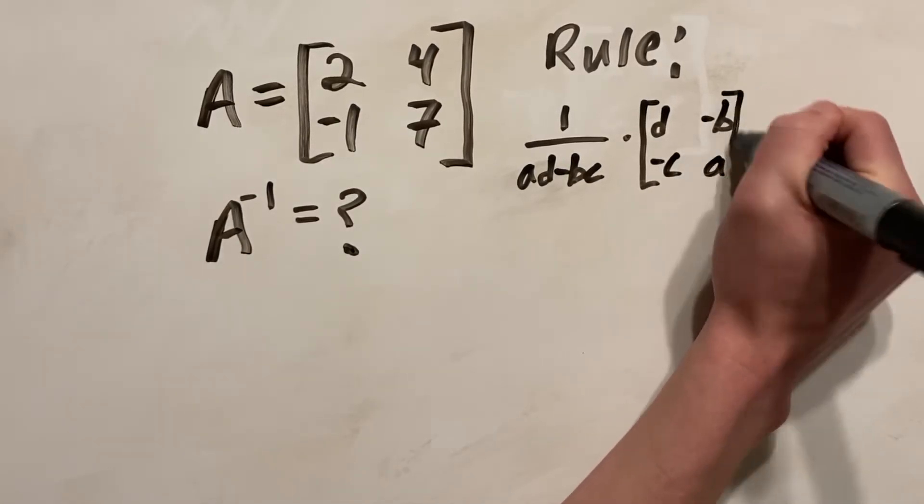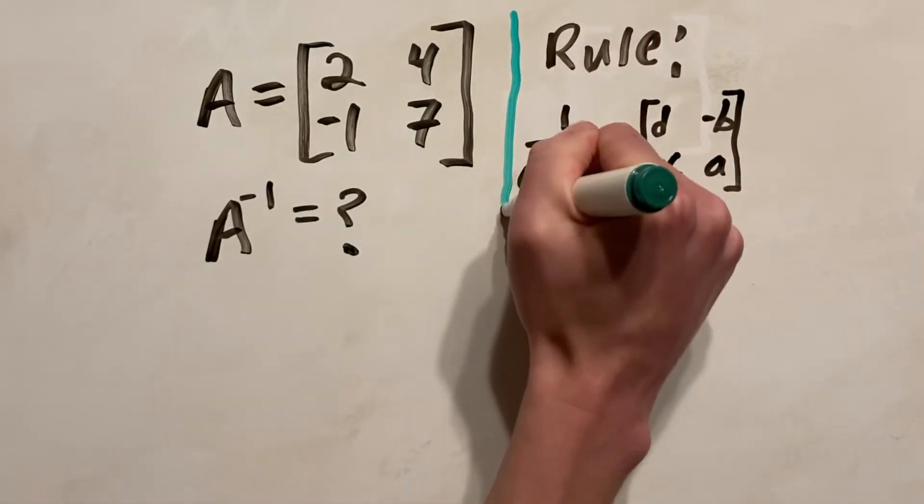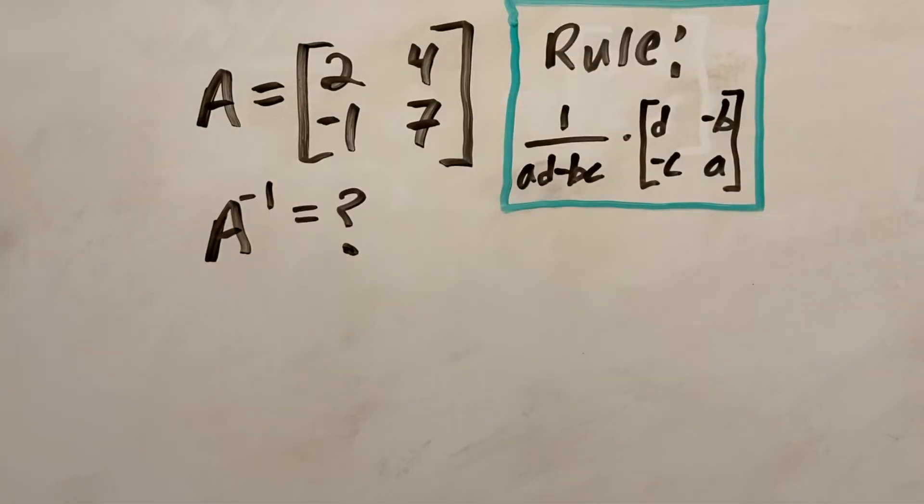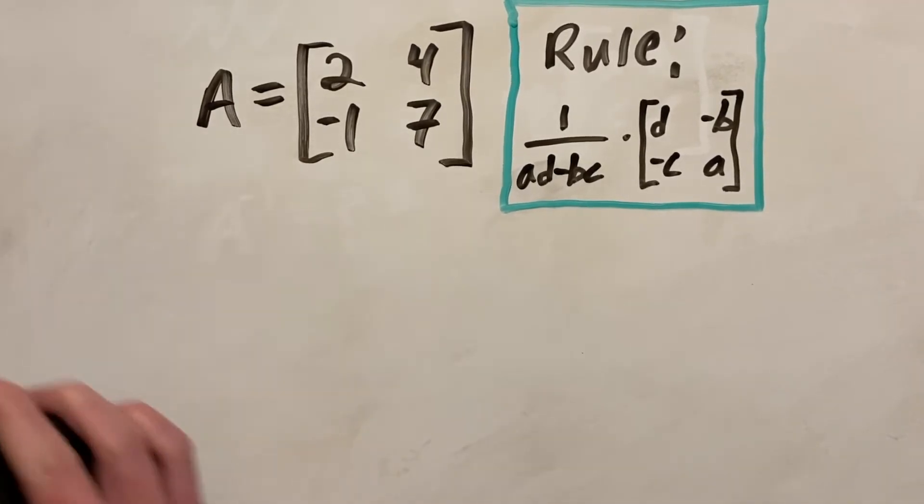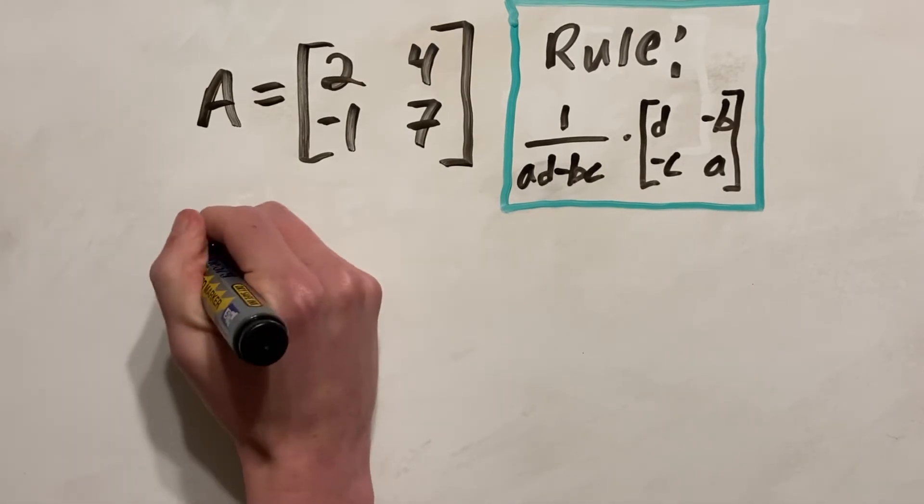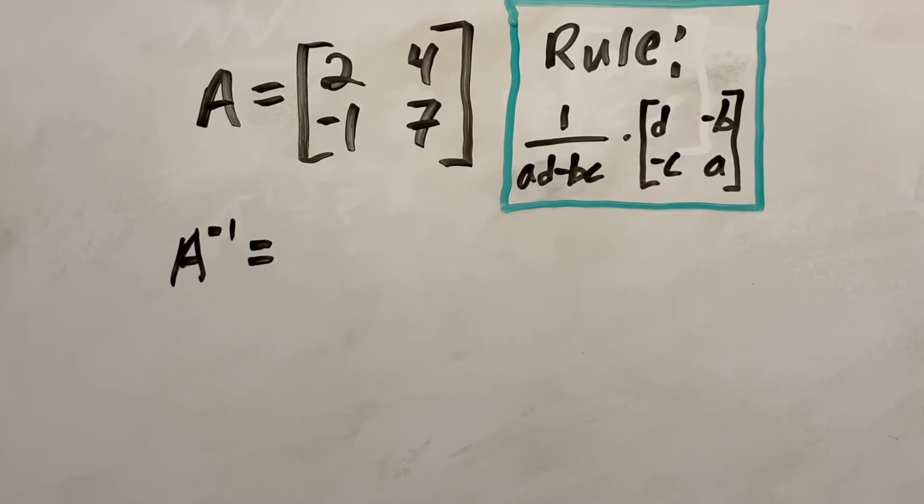So this is the rule we're going to use to find the inverse of every 2 by 2 matrix. That's an important part. This only works for 2 by 2 matrices. 3 by 3 or larger will have a different method. But usually if you're going to do it by hand, they're going to give you a 2 by 2 matrix and you will use this rule. So let's do this for our example.